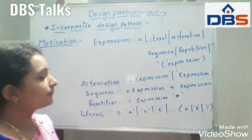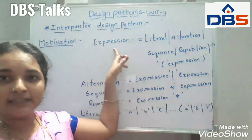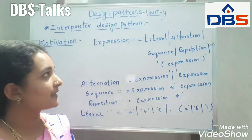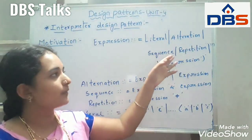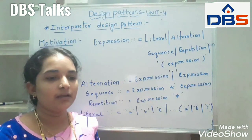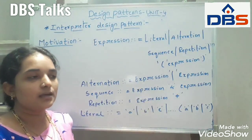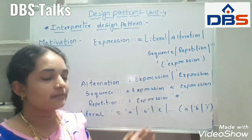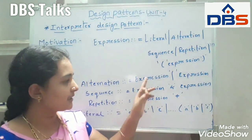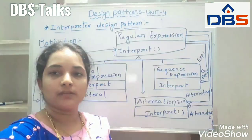So these are the different classes we are having in the regular expression. If the regular expression is an abstract class, in the abstract class we are having some classes: literal, alternation, sequence, repetition, and expression. These three classes — alternation, sequence, repetition — define variables and hold subclasses. These three subclasses will hold the variables. This is the expression we are having in the motivation.